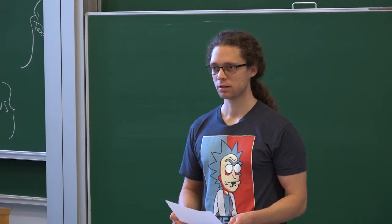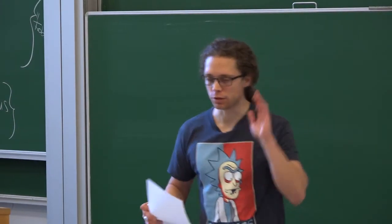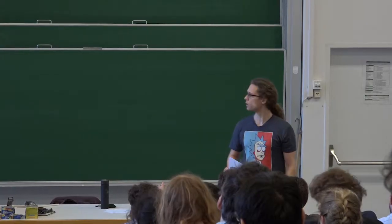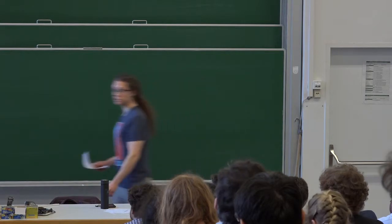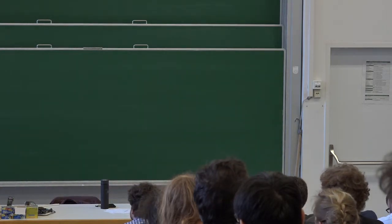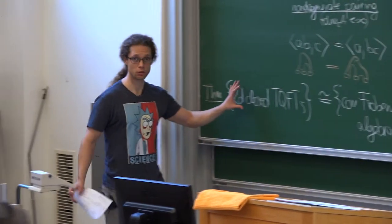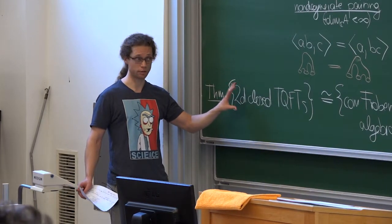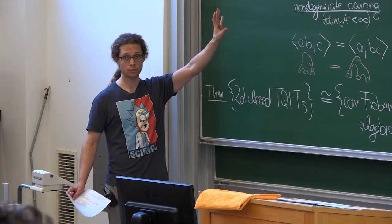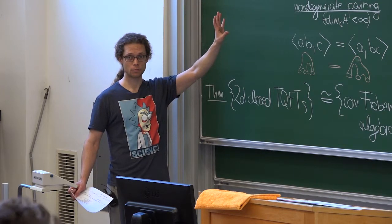Can all Frobenius algebras be realized as a functor? That's the claim, yes. So the claim is that if you have a commutative Frobenius algebra, then to this you can associate a symmetric monoidal functor between bord 2 and Vect. So you're defining TQFT in that way? No.